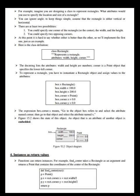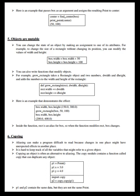The fourth topic is instances as return values. Functions can return instances. For example, find_center takes a rectangle as an argument and returns a point that contains the coordinates of the center of the rectangle. Here is an example that passes box as an argument and assigns the resulting point to center. The fifth topic is objects are mutable. You can change the state of an object by making an assignment to one of its attributes. For example, to change the size of the rectangle without changing its position, you can modify the values of width and height. You can also write functions that modify objects — for example, grow_rectangle takes a rectangle object and two numbers, dwidth and dheight, and adds the numbers to the width and height of the rectangle. Inside the function rect is an alias for box, so when the function modifies rect, box changes.